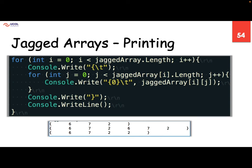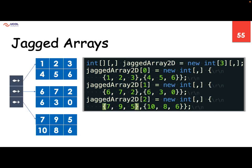This is how we can print jagged arrays. i equals zero, i less than jaggedArray dot Length — that gives me the first dimension length. Then at each point, how many elements are there — that's a simple one-dimensional array. We can also have multidimensional arrays for jagged arrays, where each jagged array element is pointing to a two-dimensional array.